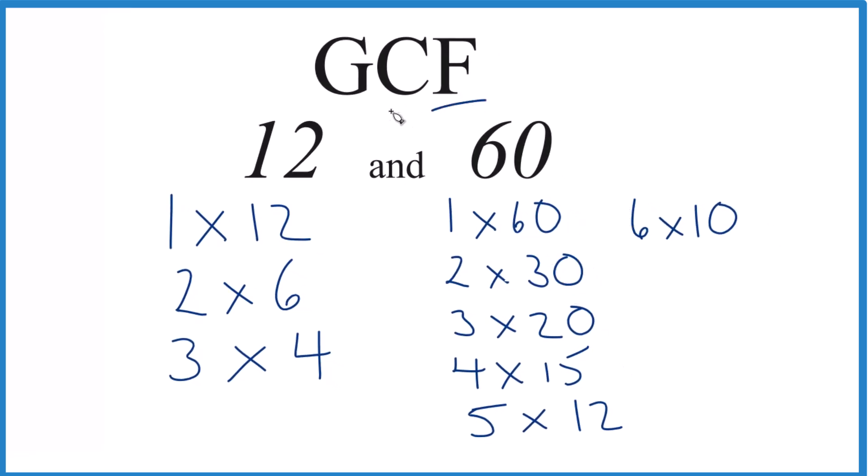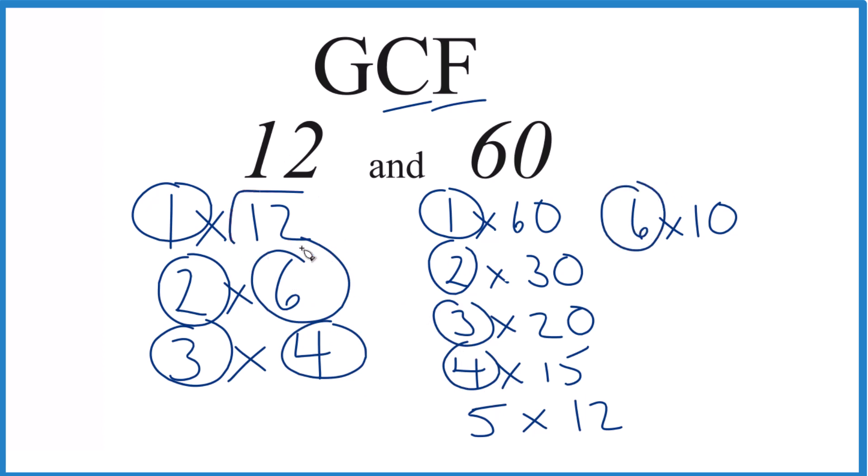So we have the factors. Let's see what's in common. 1, that's in common. 2, 3 is in common, but we have 4, that's in common. We have 6, 6 is in common. And then the greatest common factor is 12.